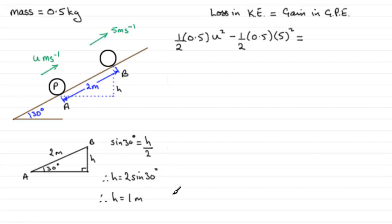Now we know the gain in gravitational potential energy is mgh, so it's m, which is 0.5, multiplied by g, which is 9.8, times h, which is 1.